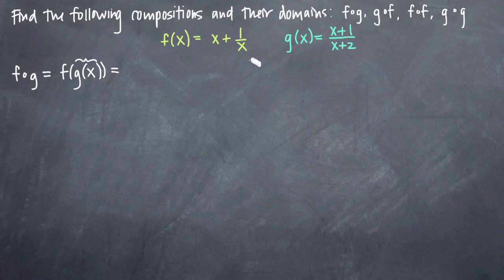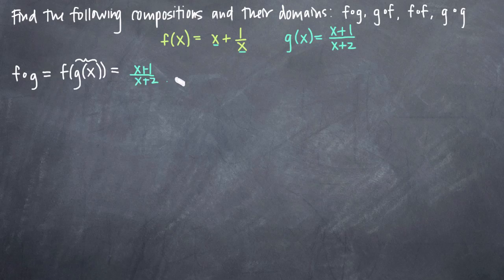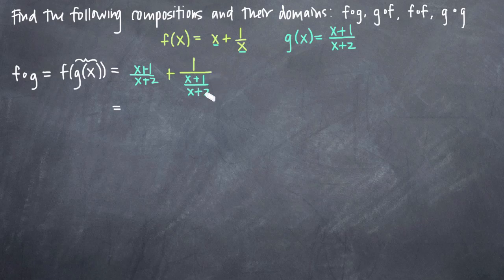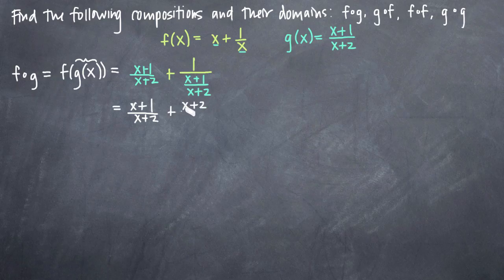So what that looks like: we'll take g of x and plug it in to f of x here and here. So that looks like x plus 1 over x plus 2 for that first x, then continuing on with our f of x function, plus 1 divided by — and now we're plugging in g of x again — x plus 1 over x plus 2. In order to simplify this second term, 1 divided by x plus 1 over x plus 2, we can just flip that fraction in the denominator and take the reciprocal. So we'll have x plus 2 over x plus 1. Whenever you have 1 divided by a fraction like that, you just flip the fraction and the 1 goes away.